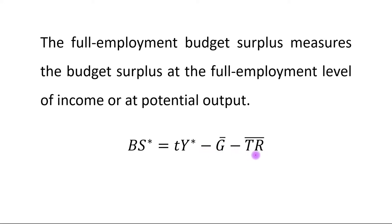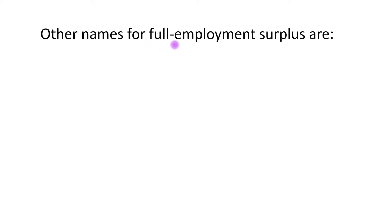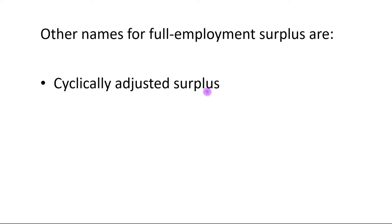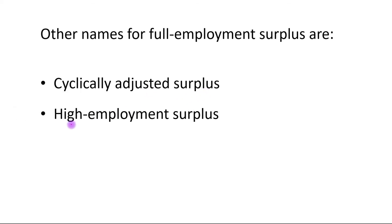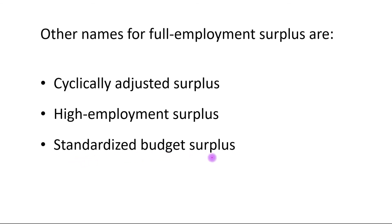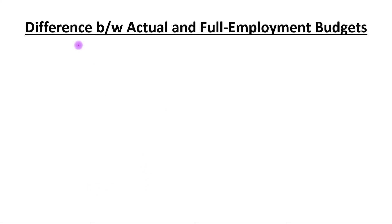transfer payments. The full employment budget surplus is measured at potential output. Other names for the full employment budget surplus are: cyclically adjusted surplus, high employment surplus, standardized budget surplus, and structural surplus.